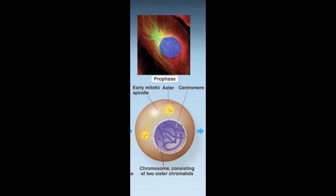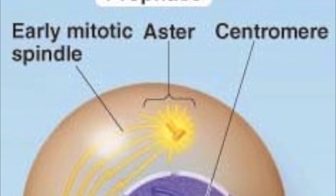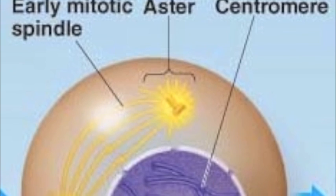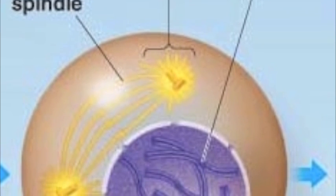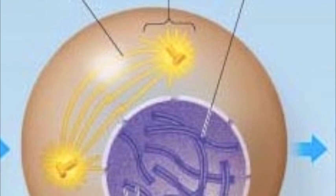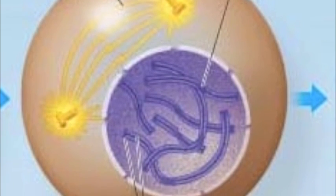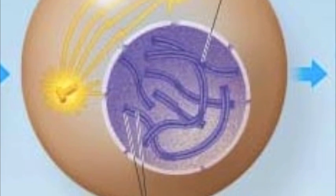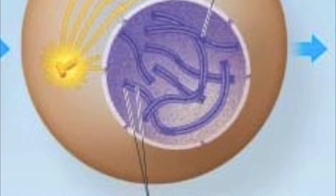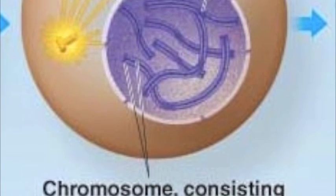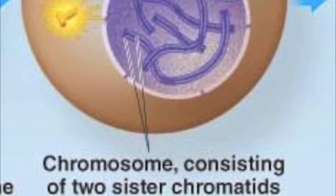In prophase, chromatin condenses to become distinguishable chromosomes. Each of these duplicated chromosomes appear as identical sister chromatids joined by centromere, the center where two chromatids are most closely attached, and by cohesins, which are proteins that connect its arms. The nucleoli disappear and the nuclear envelope begins to break down. The centrosomes now called asters move away from each other as the mitotic spindle begins to form in between them.